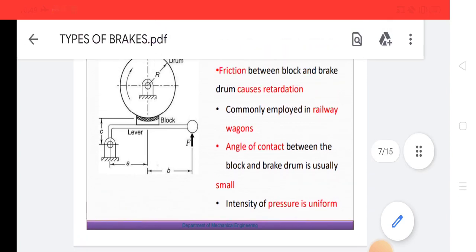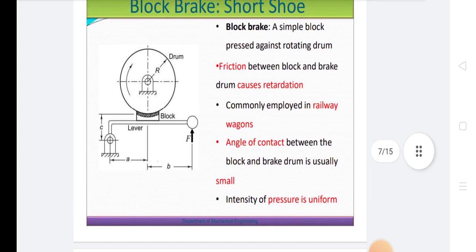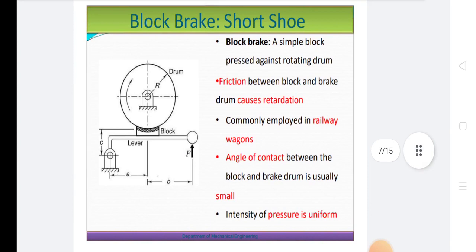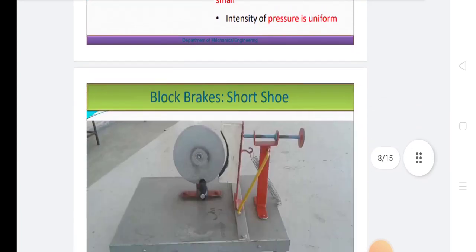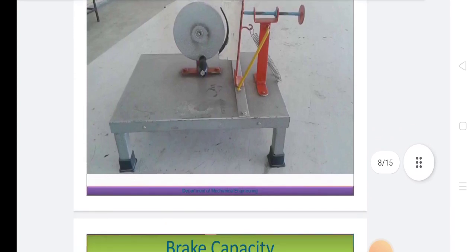These blocks or shoe brakes are further classified as single block brake, double block brake and pivoted block brakes. This is the block brake diagram for short shoe.